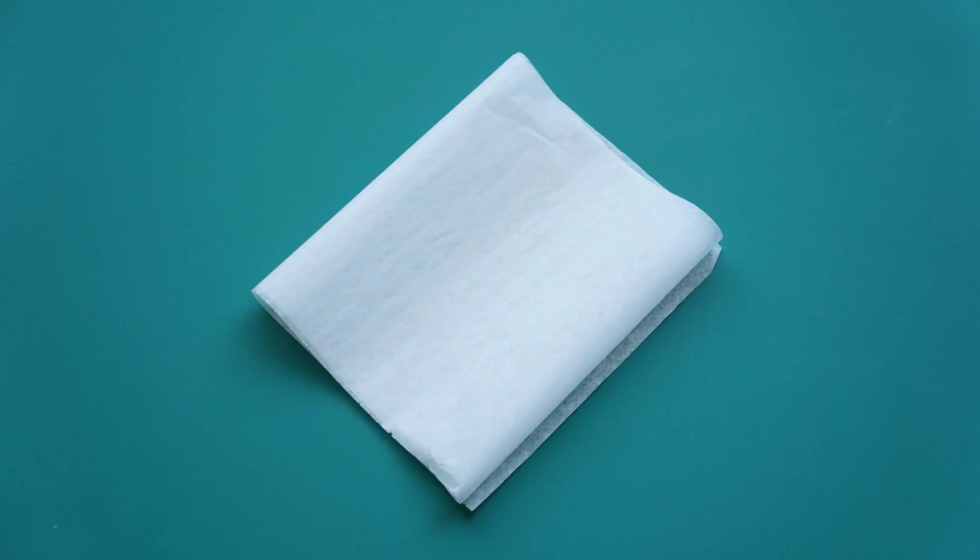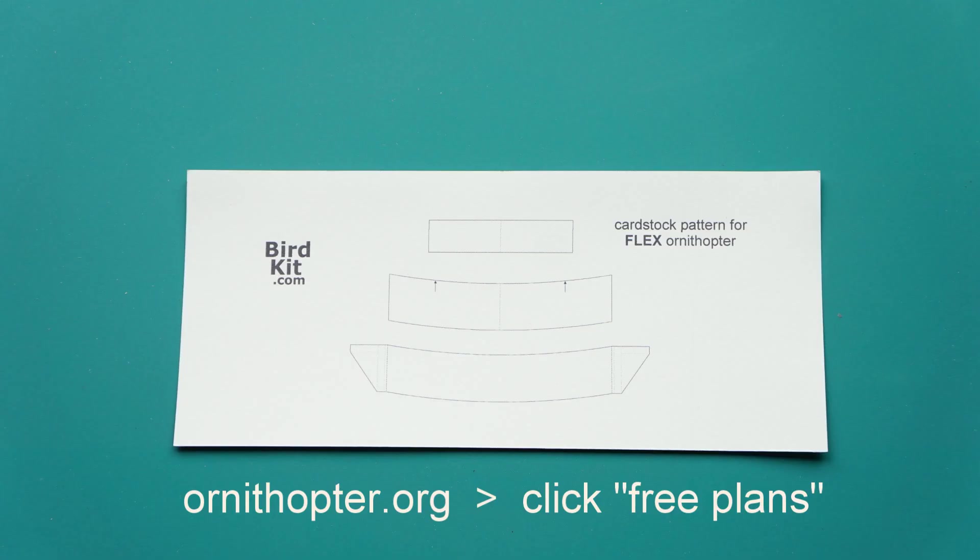I like to use tissue paper for the wings. If this is your first Ornithopter, don't try to use plastic. And finally, you can print this pattern on cardstock for the remaining components.